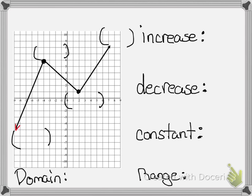This arrow right here, since it's in the third quadrant, is going to be negative infinity comma negative infinity. This point right here the order pair will be negative 4 comma 6, and the order pair for this point right here will be 2 comma 1. This arrow, since it's in the first quadrant, will be positive infinity comma positive infinity.